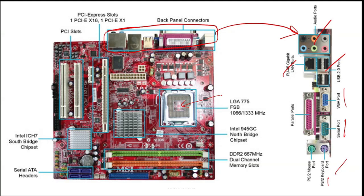These are the ports for DDR2 dual channel memory slots, or RAM. Then here, these are SATA headers — that means SATA hard disks are going to be connected to these ports.